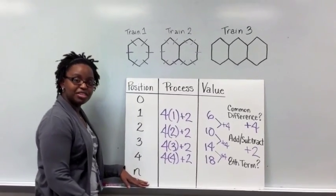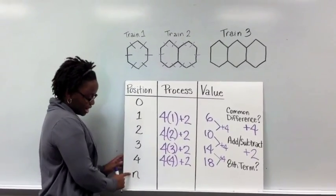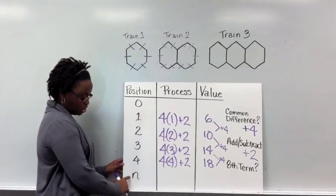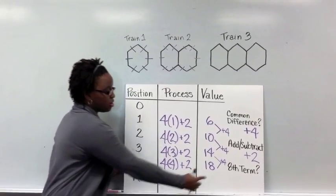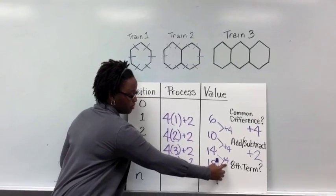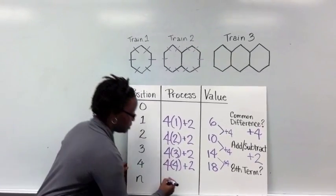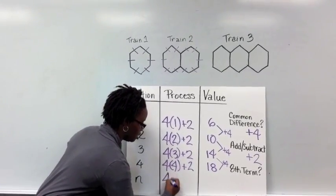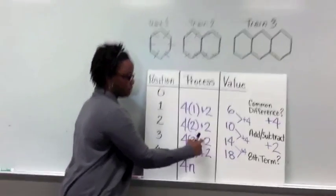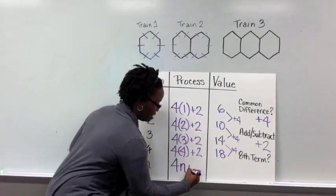And so at the bottom of your table, you've got the n, because that n is a variable saying that we can plug in any position number here. So that means I'm still doing my common difference of 4 times my position. So 4 times n, and every single time, we're adding 2.